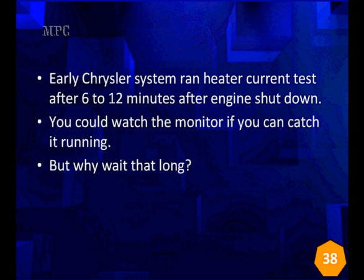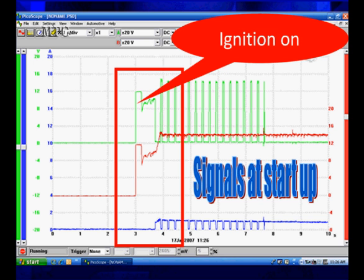Early Chrysler systems ran the heater current test after 6 to 12 minutes after engine shutdown. You could watch the monitor if you could ever catch it running. We tried for years and never could catch it running. But why wait so long? Why waste time? We can run our own test. Here is an S-Spec, and we're going to break each one of these signals down.